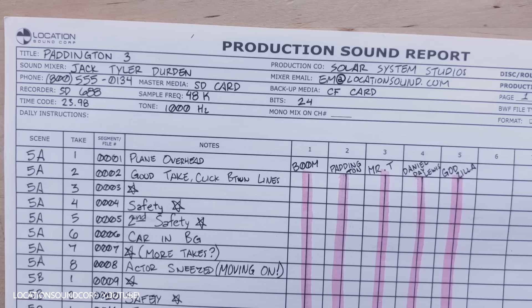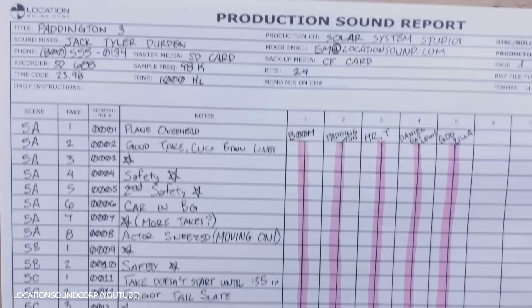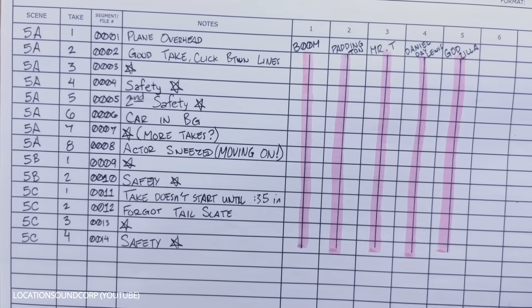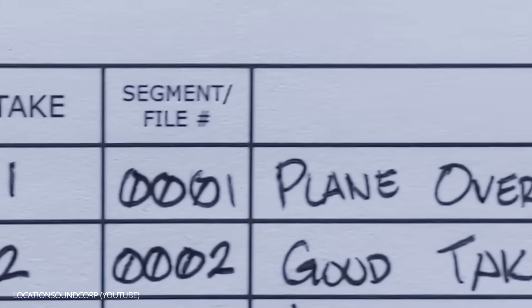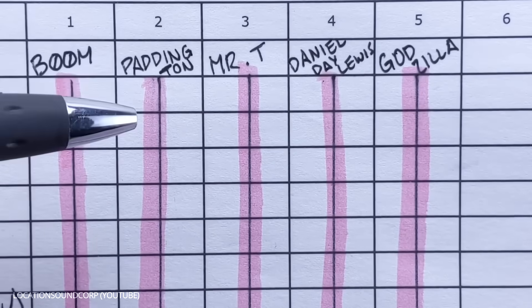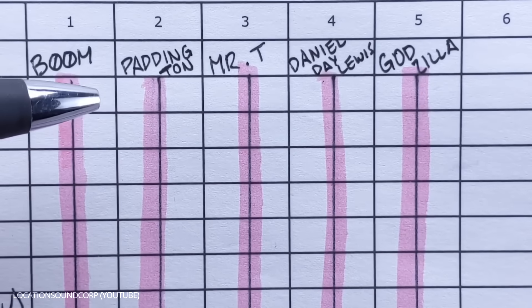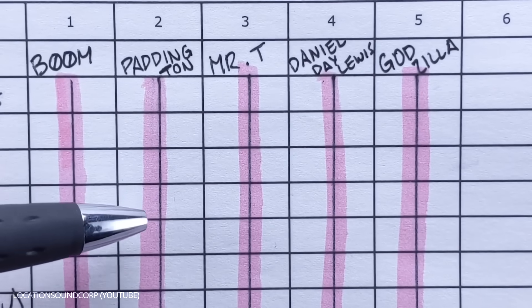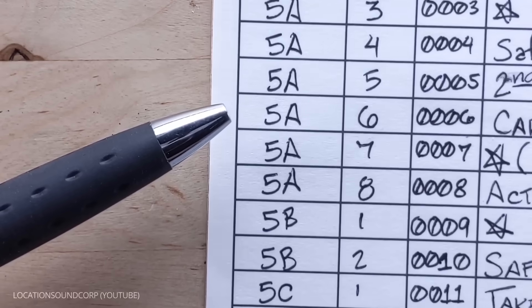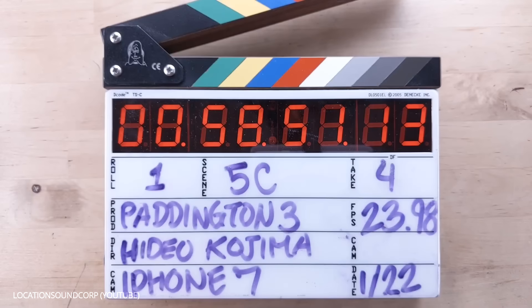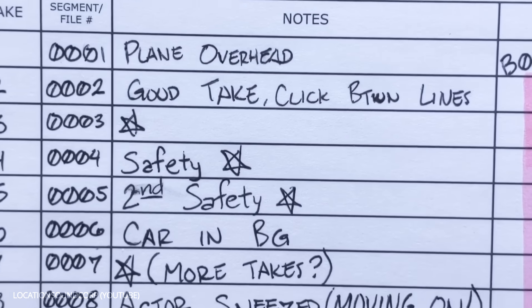At the end of each day, the sound department will fill out a sound report — a document that gives post-production information about each recorded track. This information usually includes the file names, channels, scene, take number, starting timecode, length, and any relevant notes.